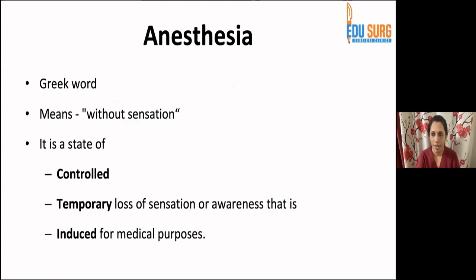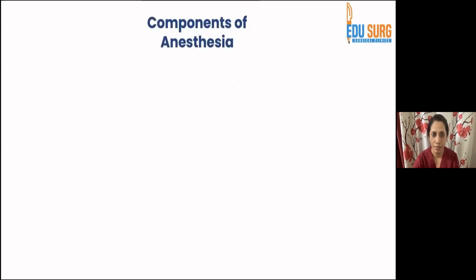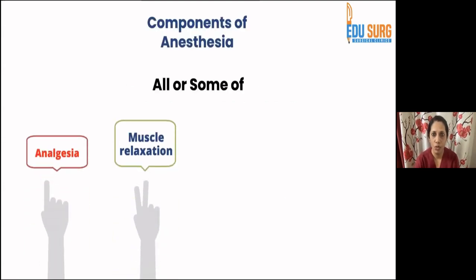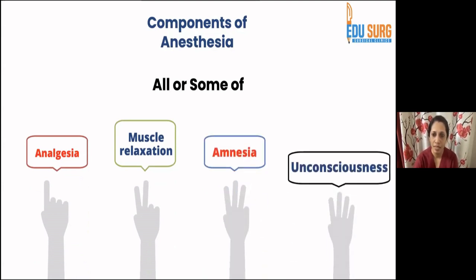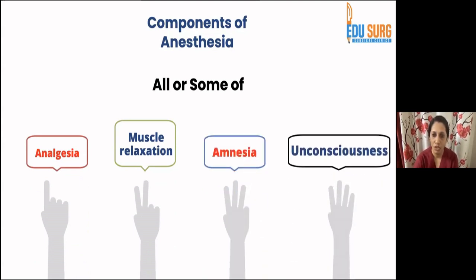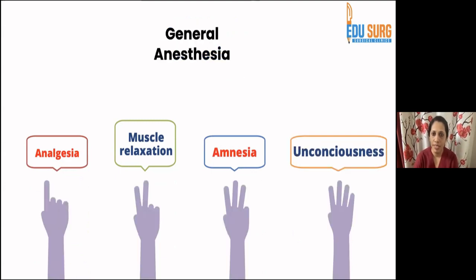What are the basic components of anesthesia? They include analgesia, muscle relaxation, amnesia, and unconsciousness. When we look at general anesthesia, it includes all four components: analgesia, muscle relaxation, amnesia, and unconsciousness.